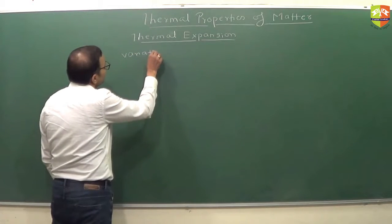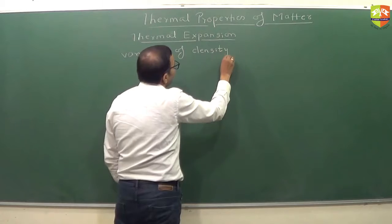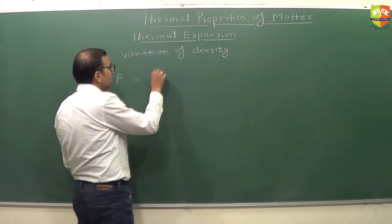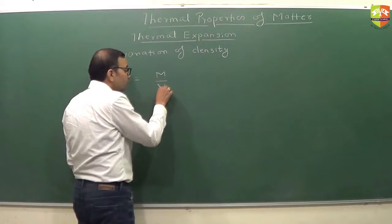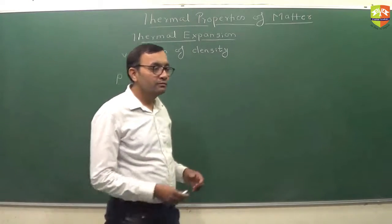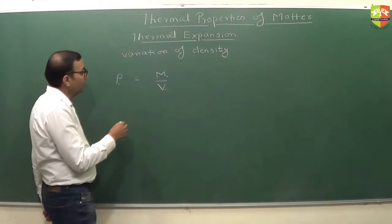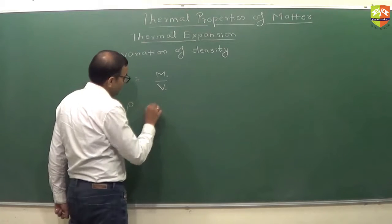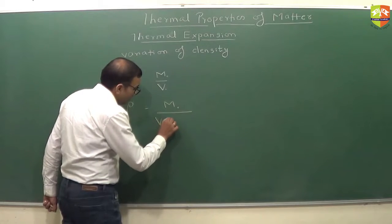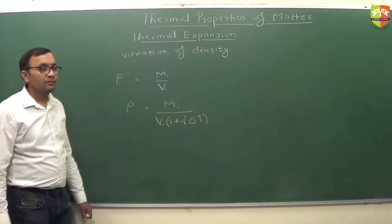Variation of density. So density is nothing but mass divided by volume. Original density, let's say, is rho0, which is M0 by V0. Now, if you increase the temperature, the density should be equal to mass remains the same M0, and volume becomes V0 times 1 plus gamma delta t.